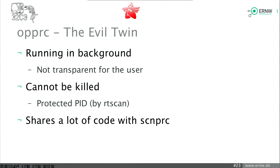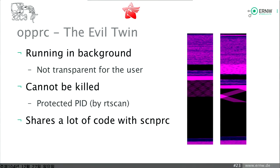The OPPRC service is even more interesting — it runs in the background with no GUI, and no user can trigger it. Crucially, it is a protected PID, so even root cannot kill this process. SCNPRC can be killed with root privileges, but OPPRC cannot. The kernel module cannot be unloaded unless OPPRC is killed, and OPPRC can't be killed — so they protect each other, meaning no one can stop the services at all. This service shares a lot of code with SCNPRC, and most interestingly, it watermarks files.